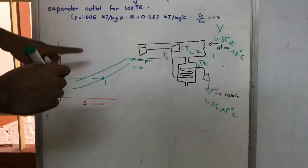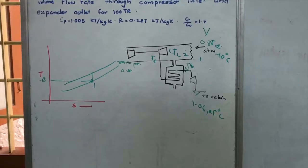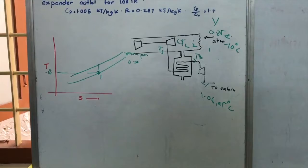From Point 1 to Point 2, the process is ramming. Since there is no mention of ram efficiency in the question, we consider it as an ideal process.